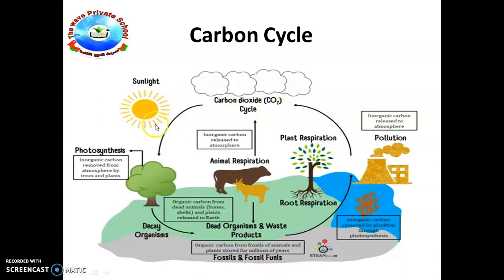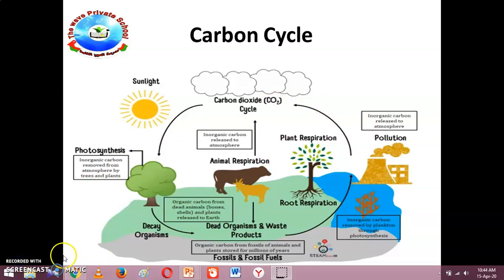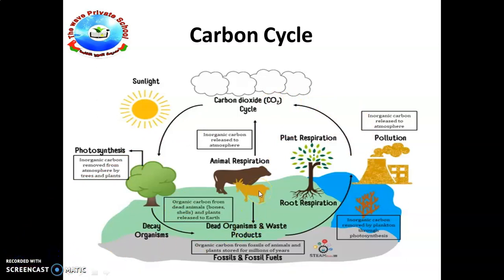Plants take in carbon dioxide for photosynthesis and release carbon dioxide through respiration. When plants and trees respire, the carbon in glucose becomes part of carbon dioxide molecules again and is released back into the air. In the feeding process, some carbon in plants is eaten by animals, which also respire and release carbon dioxide back into the atmosphere.